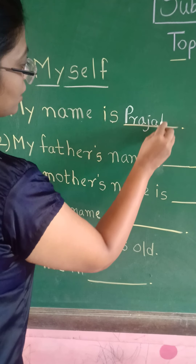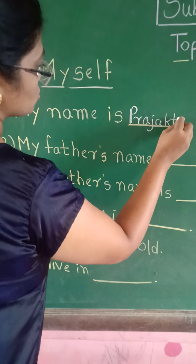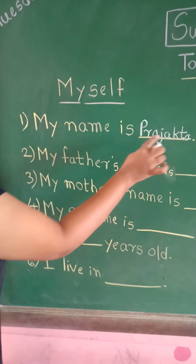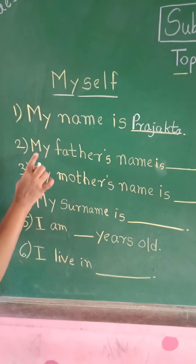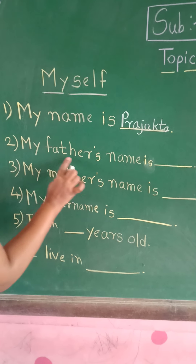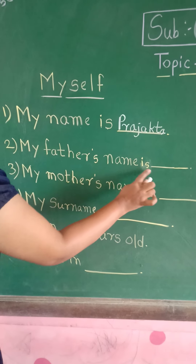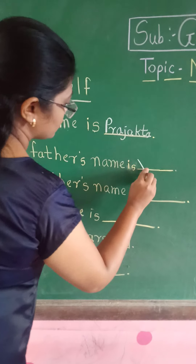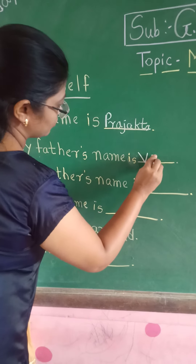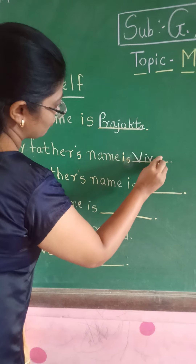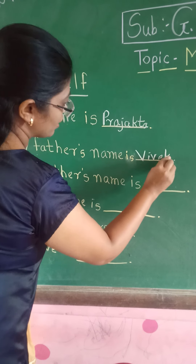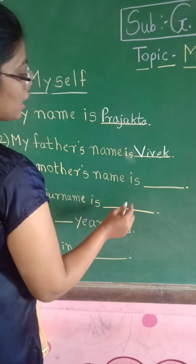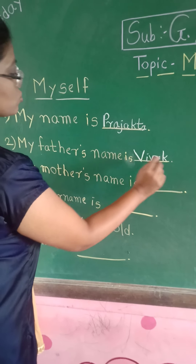My name is Prajata. I have written Prajata. My name is Prajata. Second, my father's name is — my father's name is — now I will write my father's name. My father's name is Vivek. V is capital because it is a proper noun. My father's name is Vivek.